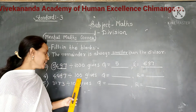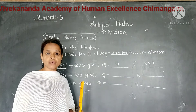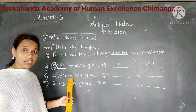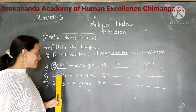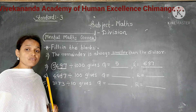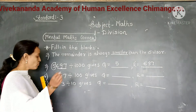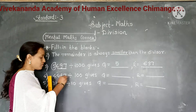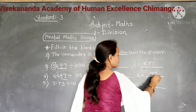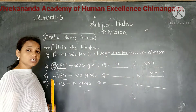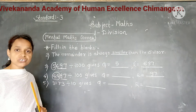Next: 4497 divided by 100 gives quotient and remainder. We have learned that when we divide a number by 100, the digits in the 1 and 10 places together form the remainder. Here the digits in the 1 and 10 places form 97, so 97 is the remainder. And the rest of the digits form the quotient, which is 44.